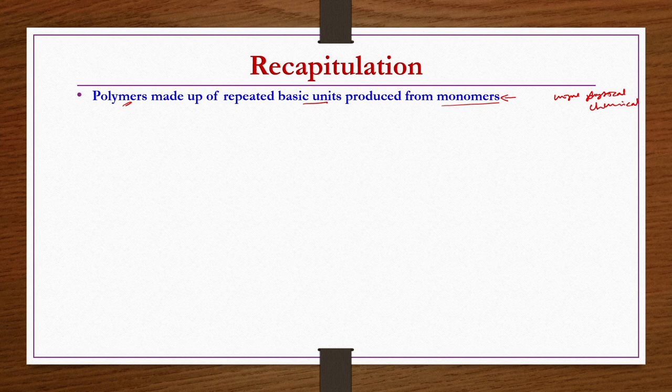In other words, if you want to make a comparison or compete with existing conventional materials, polymers should be able to replace existing materials like wood and metal, and you can do the required engineering processing. Such requirements are expected to be fulfilled by polymers. We then started discussions on the classification of polymers, production methods, reactions, and types of materials produced.